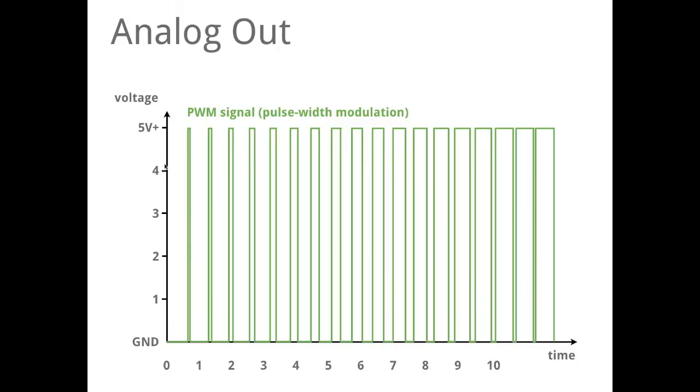And Arduino can handle 256 steps of the signal, of this pulse width modulation. So we can send a value from 0 to 255, how the signal should appear.